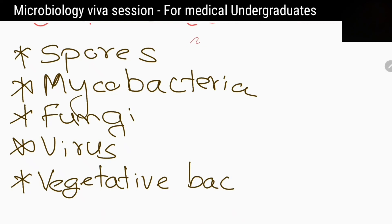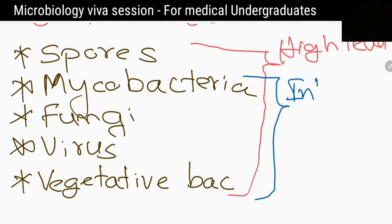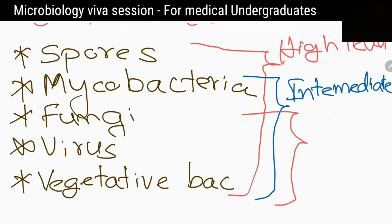What about the other disinfectants? Intermediate level disinfectants like 20% alcohol and 1% hypochlorite kill vegetative bacteria, mycobacteria, most viruses and fungi, but cannot kill spores.